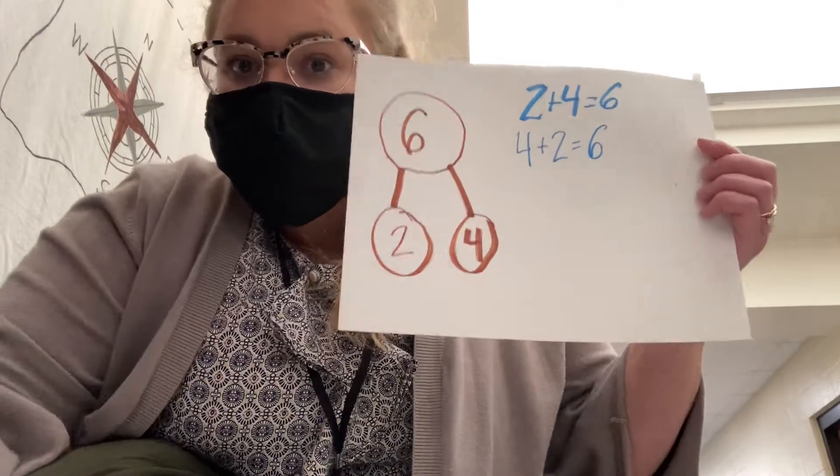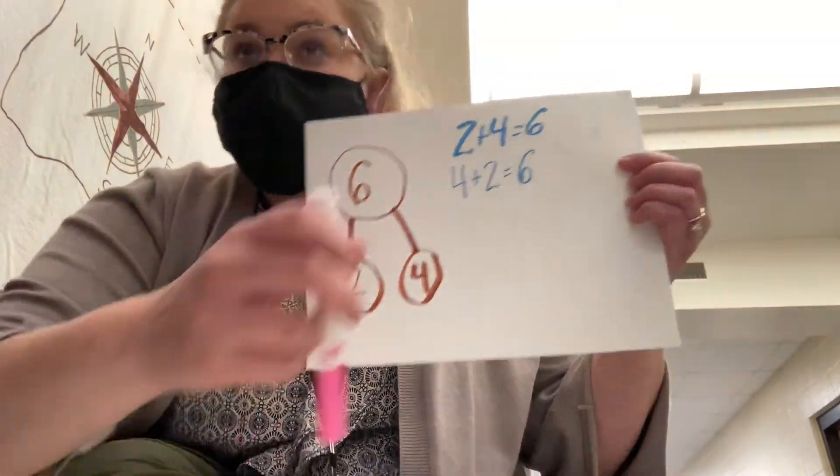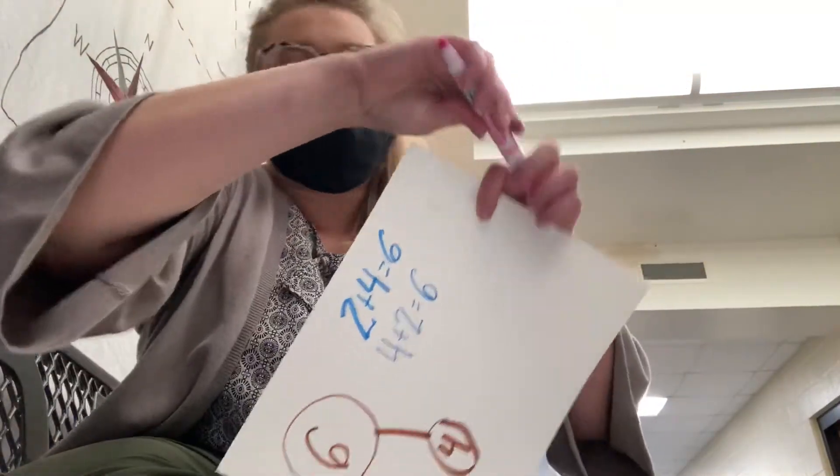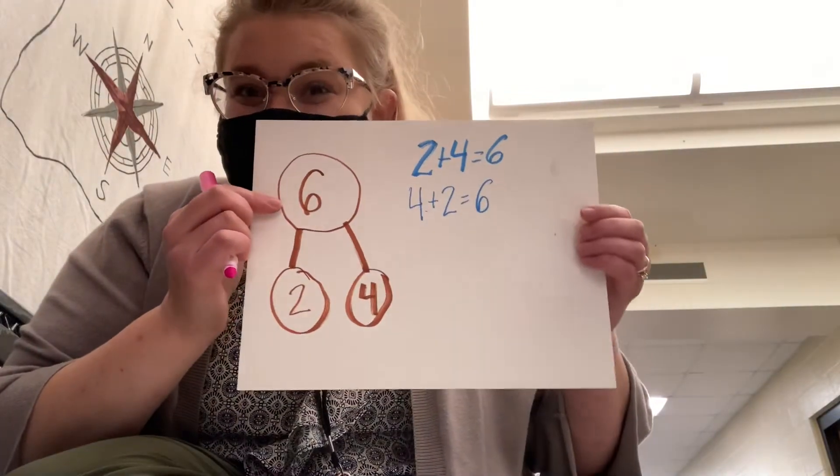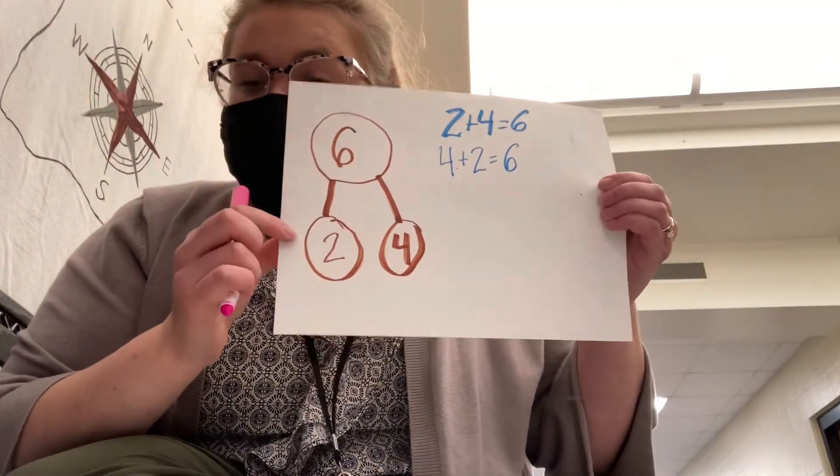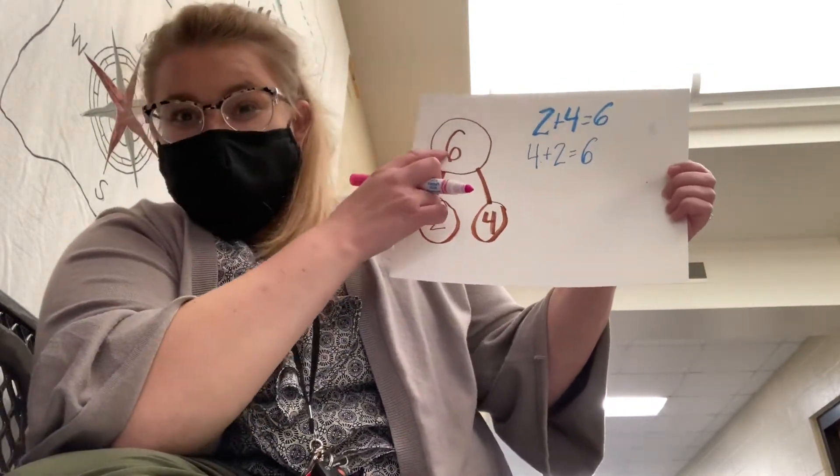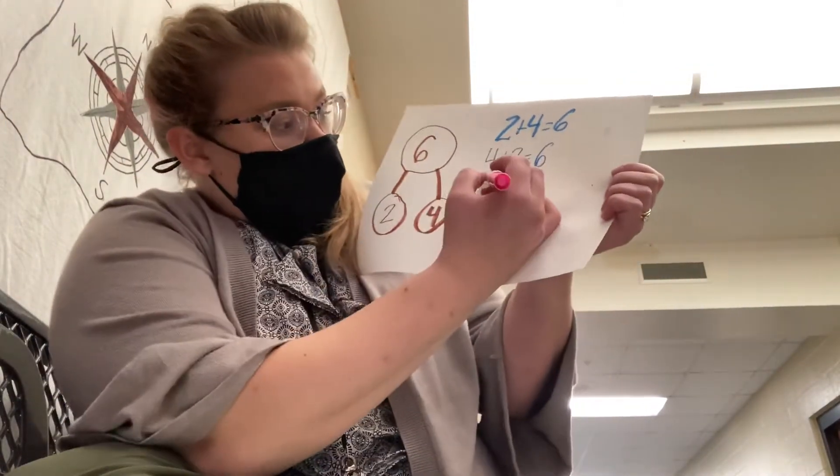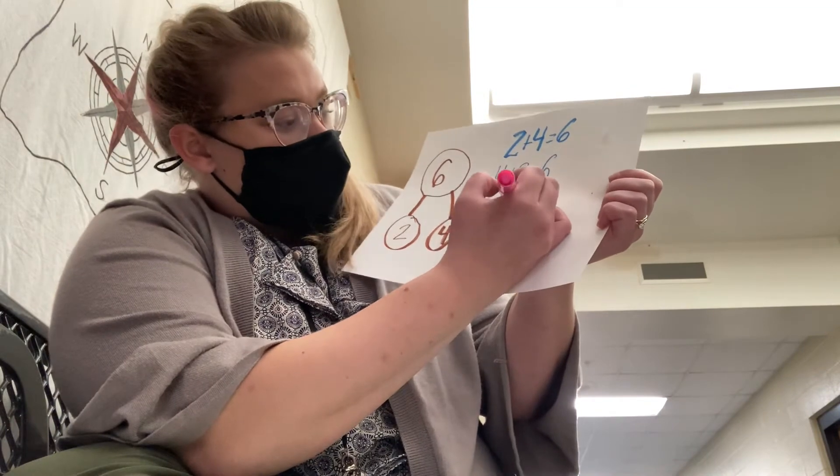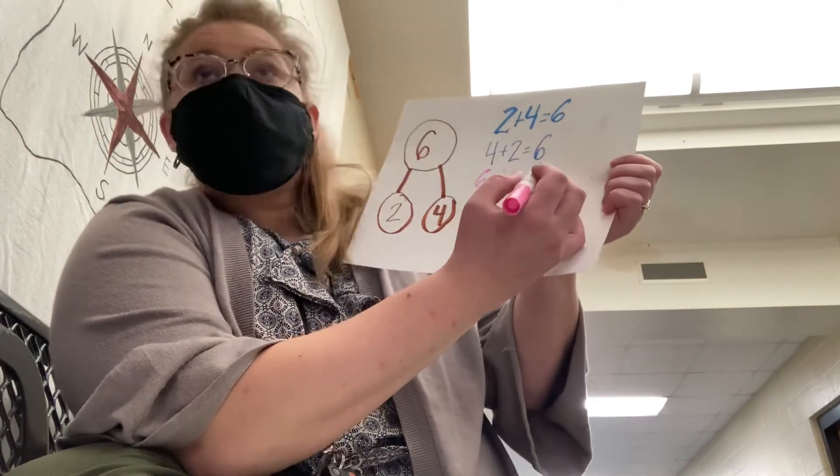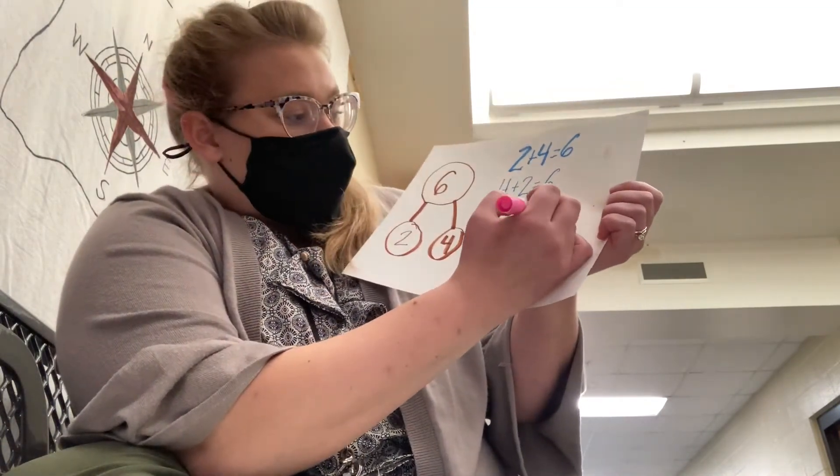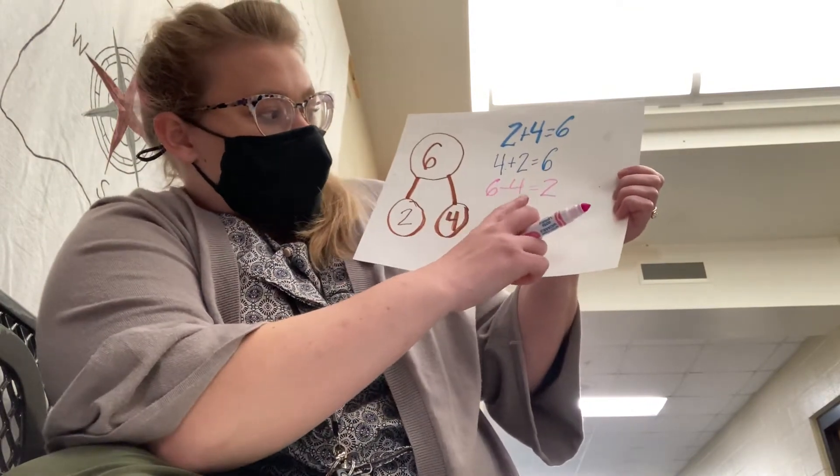We can also represent this problem using subtraction. So we start with our whole, six, and we take away one part and we're left with the other part. So if I have a pile of six and I give Isabelle her candy back, I would have six minus four and those two pieces of candy would be left over. Six minus four equals two.